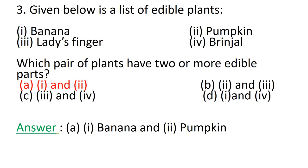In the later options, lady's finger and brinjal, the fruit is the only edible part. Hence, according to our question, option a — one and two — that is, banana and pumpkin, are the plants that have more edible parts.